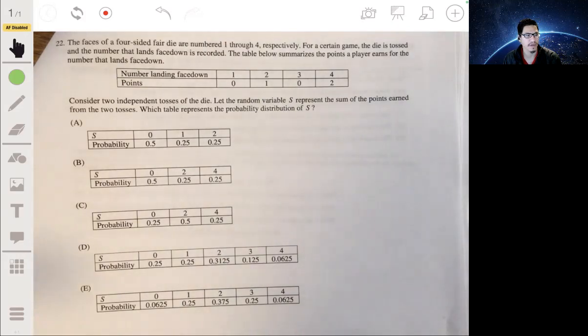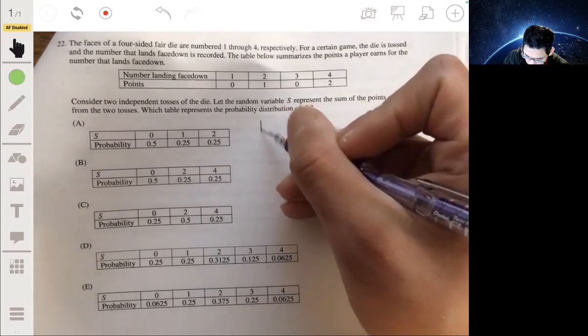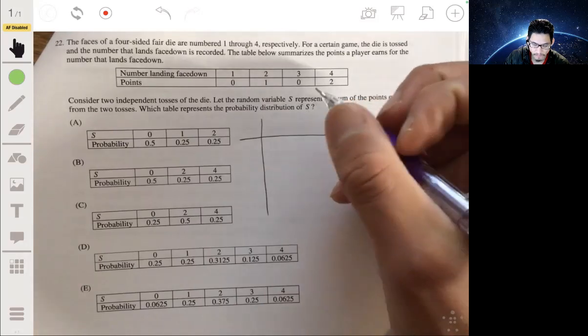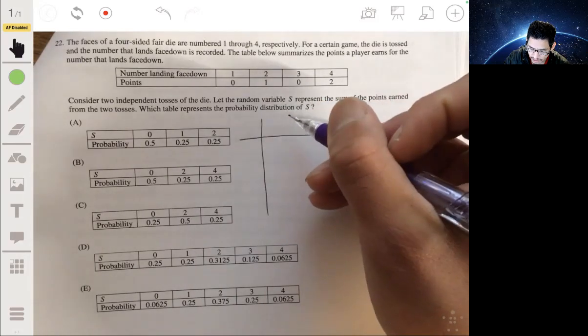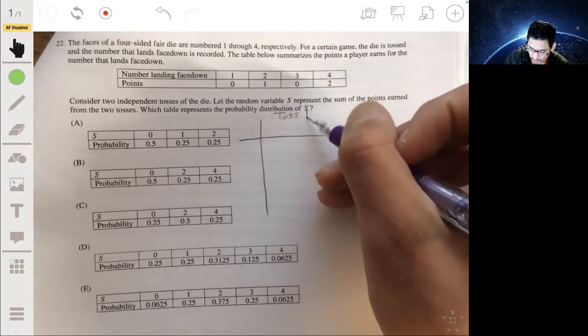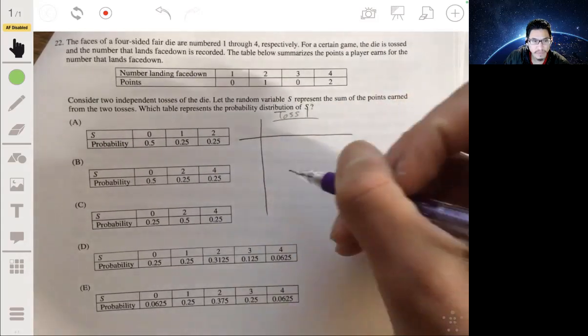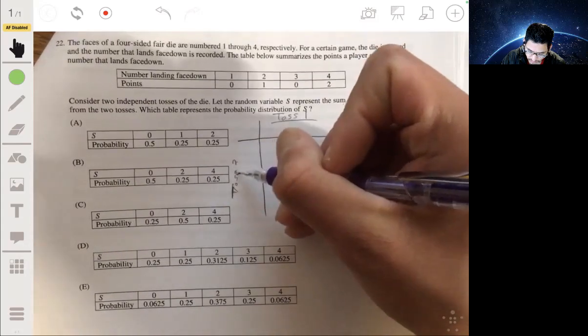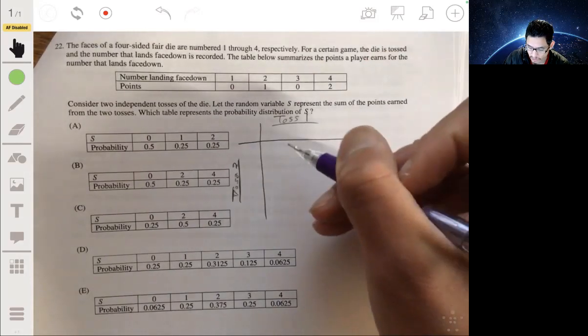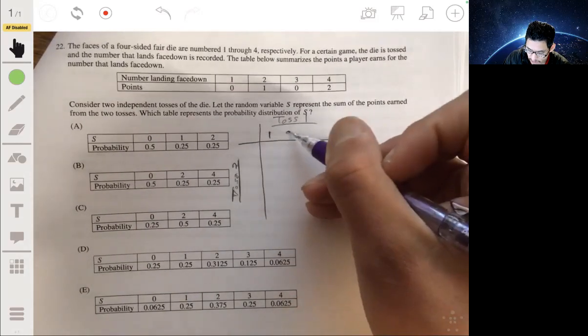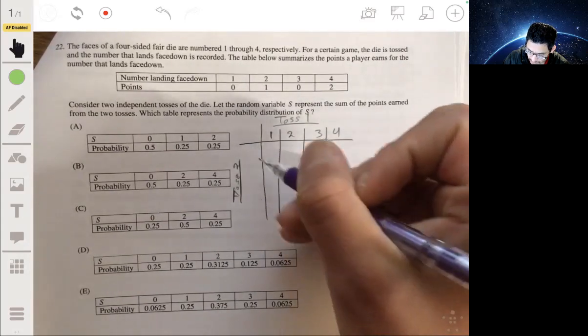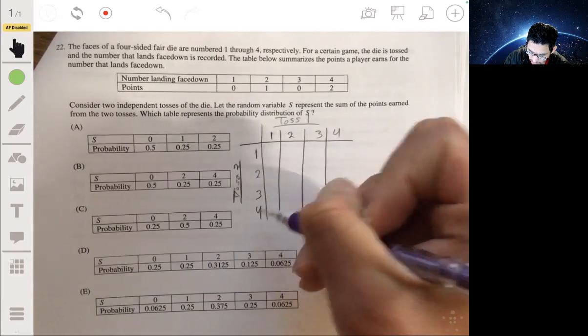Consider two independent tosses of the die. Let the random variable s represent some of the points earned from the two tosses, which table represents the probability distribution of s. Okay, so we have to first see what are the possible points we can get, and then we can figure out the probability. So I like to set up a table where you can have toss one going across the top, and then toss two will be going across the rows.